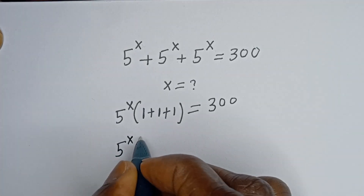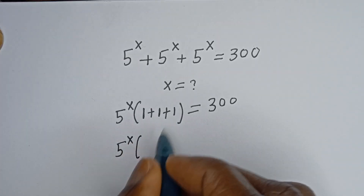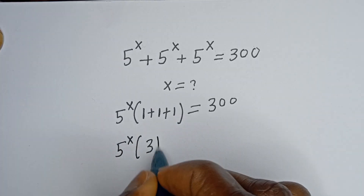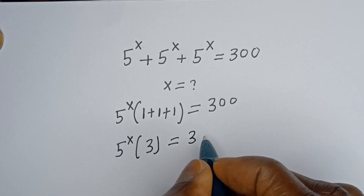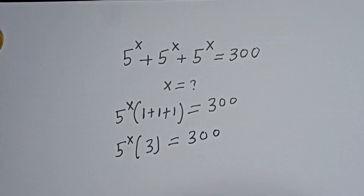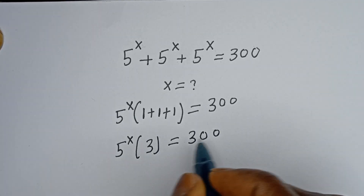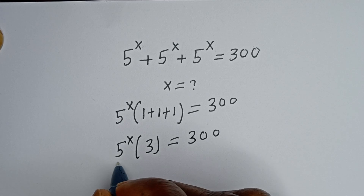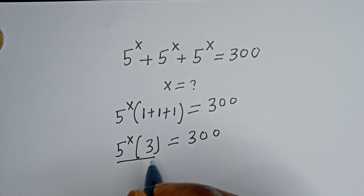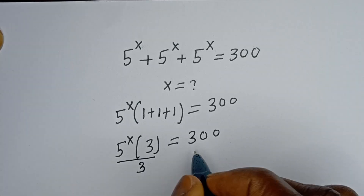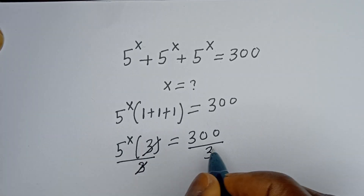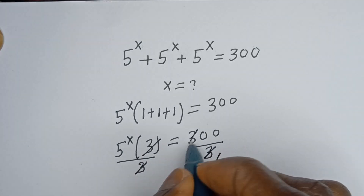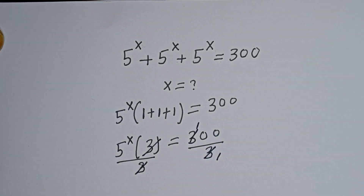Then we have 5 to the power of s, bracket 1 plus 1 plus 1, that is 3, is equal to 300. We can then divide both sides of this equation by 3 — this divided by 3 and this divided by 3. This will cancel this 3, leaving 1, and 300 divided by 3 is 100.